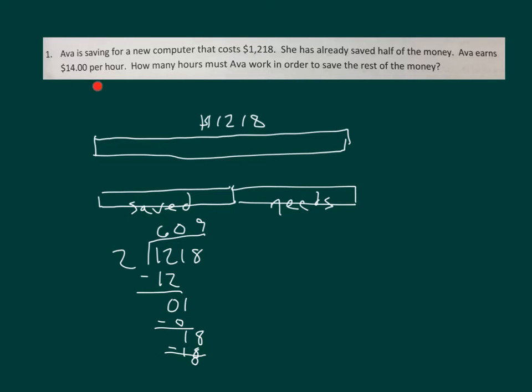Now to solve, it says if she already earned $14 per hour, then we'll take $609 and divide it by 14. 14 goes into 60 four times because 4 times 14 is 56. 60 minus 56 is 4. Bring down the 9. 3 times 14 is 42. We add a 0 to drop a 0. 70 divided by 14 is 5. So that's 43 and a half hours that she must work.